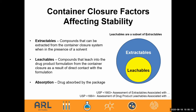Container closure integrity is very important. Extractables are compounds that can be extracted out of a container closure system in the presence of a solvent. Leachables are a subset of extractables — compounds that leach into the drug product from the container closure itself as a result of direct contact with the formulation. Absorption is when the drug itself absorbs to the container closure, the lid, or the septum. All of these are important issues and demonstrate why container closure integrity is critical to the stability of a product or preparation.